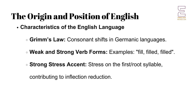English displays certain characteristics common to all Germanic languages. These include Grimm's Law, the systematic shifting of consonant sounds that distinguishes Germanic languages from other Indo-European languages. English verbs are divided into weak or regular verbs, such as fill, filled, filled, and strong verbs that form their past tense through internal vowel changes. Additionally, English, like other Germanic languages, places a strong stress accent on the first or root syllable of most words, which played a crucial role in the reduction of inflections in the language over time.